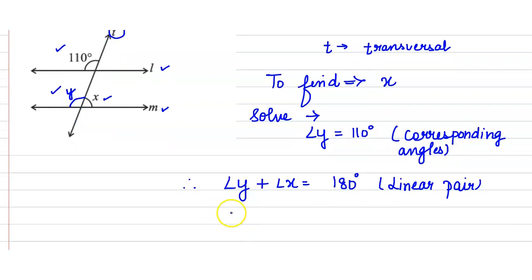Substitute the value of y: 110 plus x equals 180 degrees. Therefore, x equals 180 minus 110, which equals 70 degrees. So x is 70 degrees. I hope this is clear. Thank you.